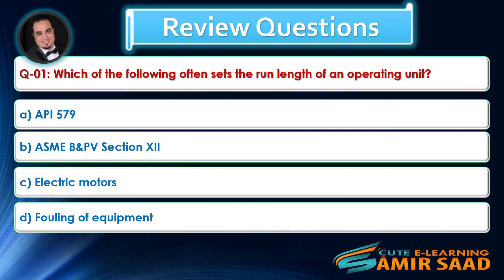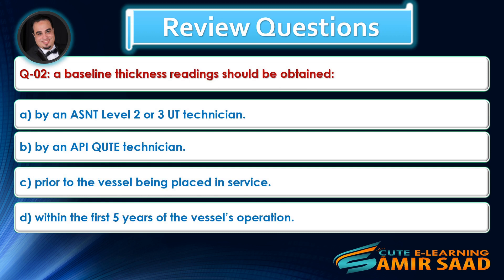Review questions: Question 1 asks which factor often sets the run length of an operating unit — the answer is D. Question 2 asks when baseline thickness readings should be obtained — the answer is C.